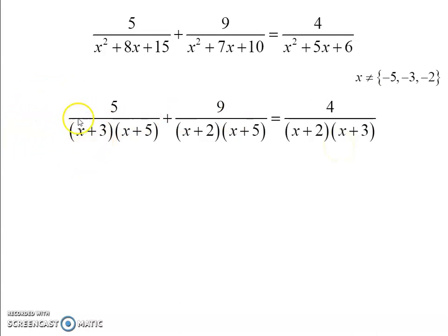This one is missing x plus 2. I'll have to multiply by x plus 2 over x plus 2. This one I'll have to multiply by x plus 3 over x plus 3. And this one, x plus 5 over x plus 5. That's the one factor that's missing from each one.